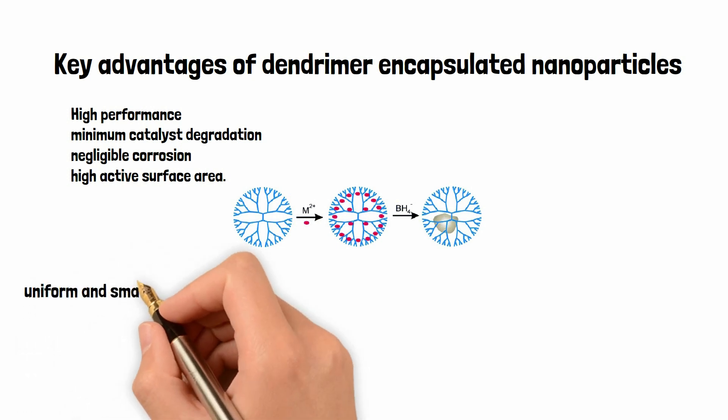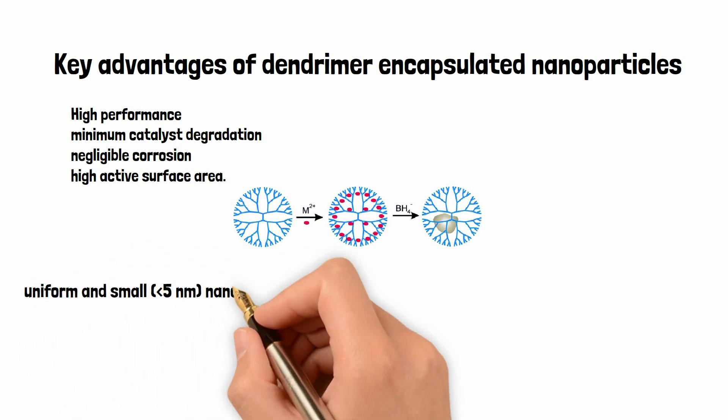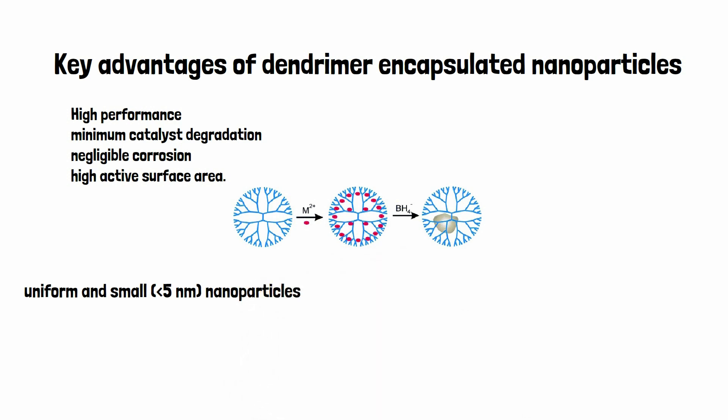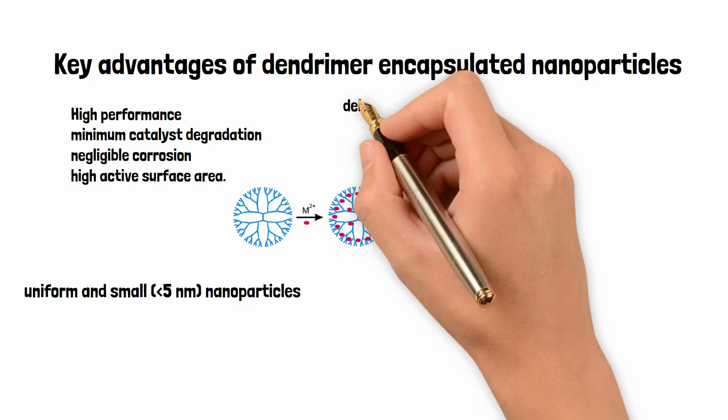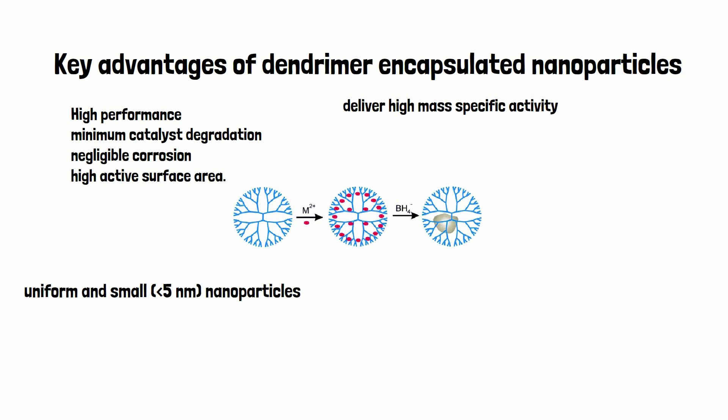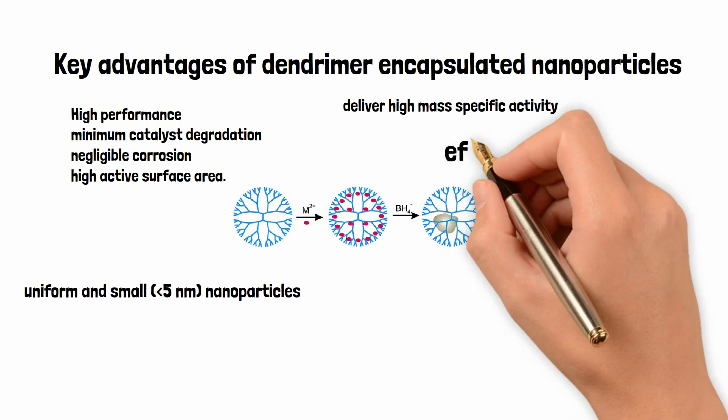2. PAMAM dendrimer has a unique ability to produce uniform and small (less than 5 nm) nanoparticles due to its good chelating ability and excellent solubility in aqueous solvents. 3. The nanoparticles obtained via PAMAM dendrimer complexation route have not only produced high surface area materials but also enabled them to deliver high mass-specific activity in electrocatalytic reactions such as ORR.